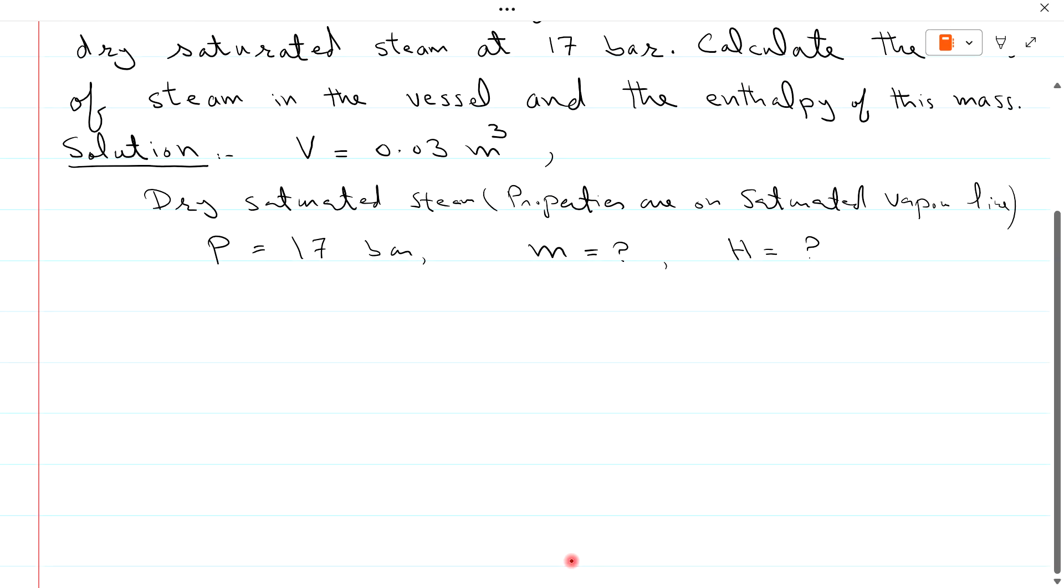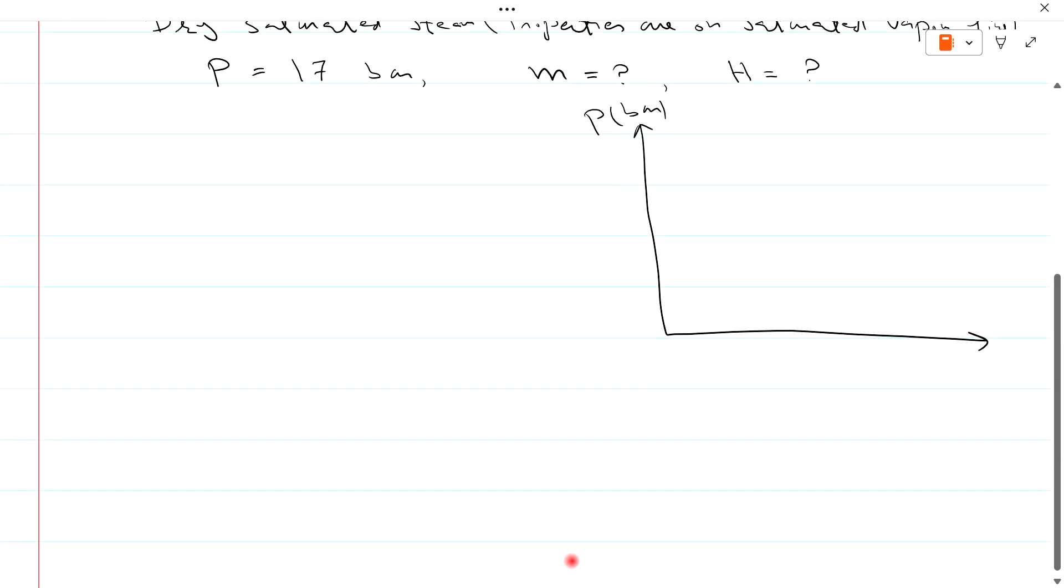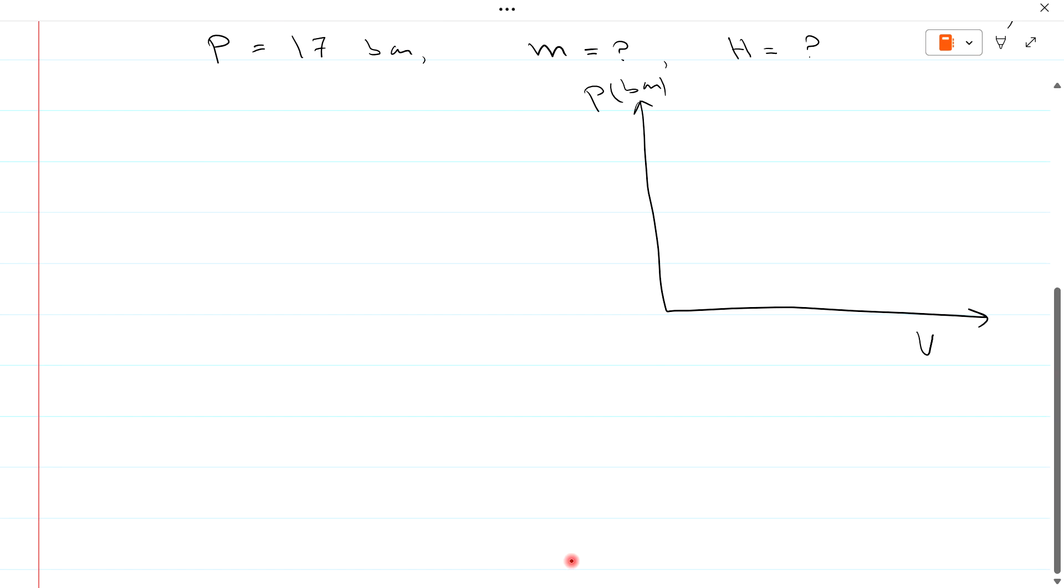One important point is that this is dry saturated steam. So first I draw P-V diagram. Pressure on Y axis in bar and specific volume V on X axis in meter cube per kg.